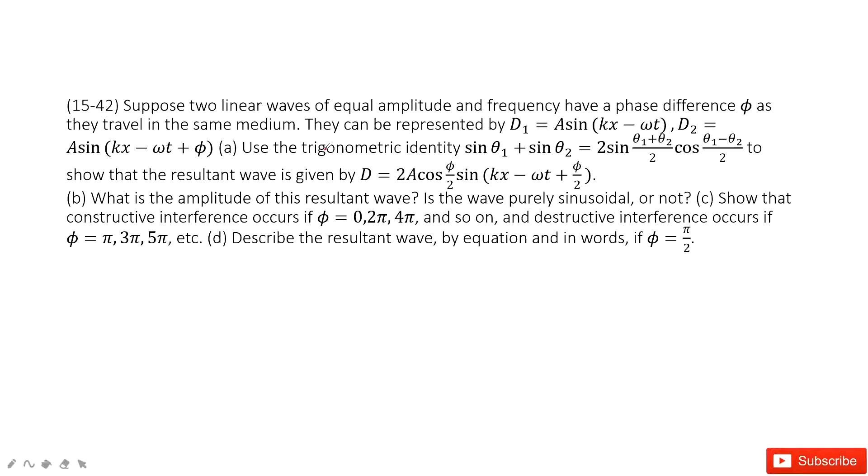In chapter 15, we have two linear waves and the wave function is given there, d1 and d2. And then we need to find the resultant waves in this form to prove it. And then it gives us a hint. This function is as a hint. How can we solve it?